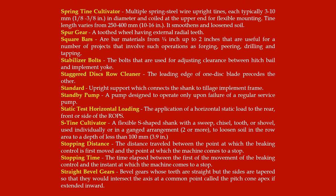Spur gear: a toothed wheel having external radial teeth. Square bars: bar materials from 1/4 inch up to 2 inches useful for operations such as forging, peering, drilling, and tapping. Stabilizer bolts: bolts used for adjusting clearance between hitch bail and implement yoke. Staggered discs row cleaner: the leading edge of one disc blade precedes the other.